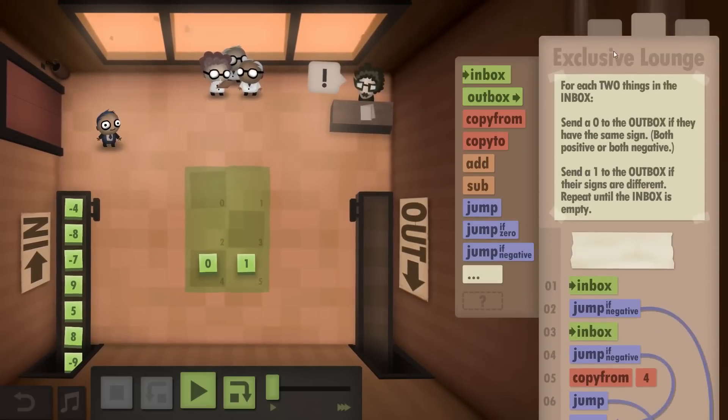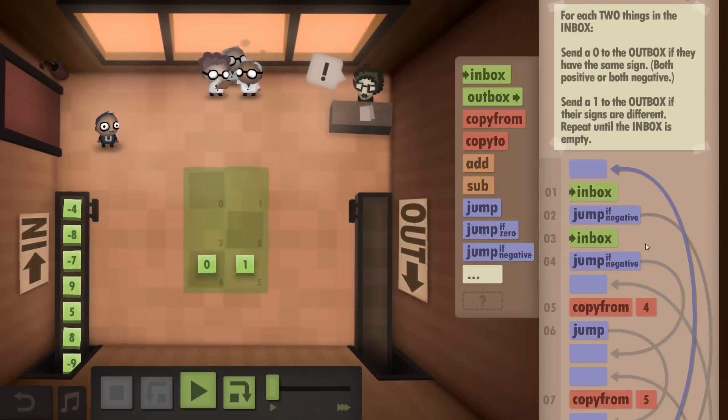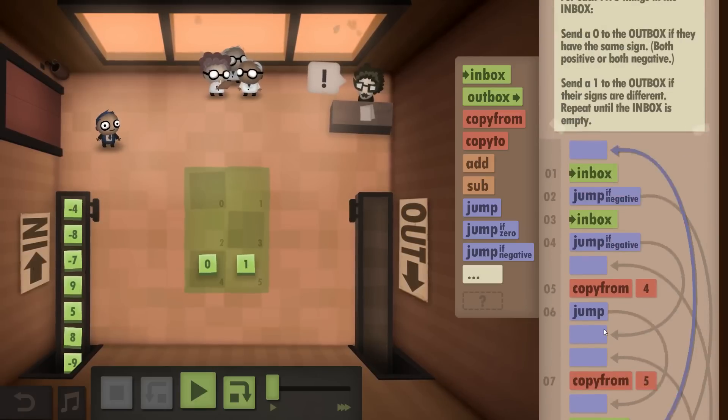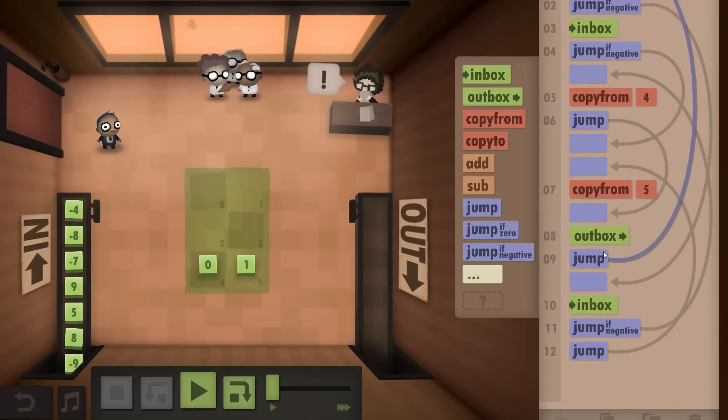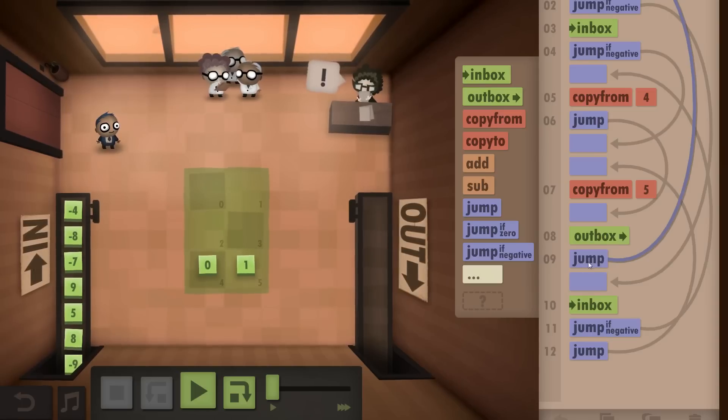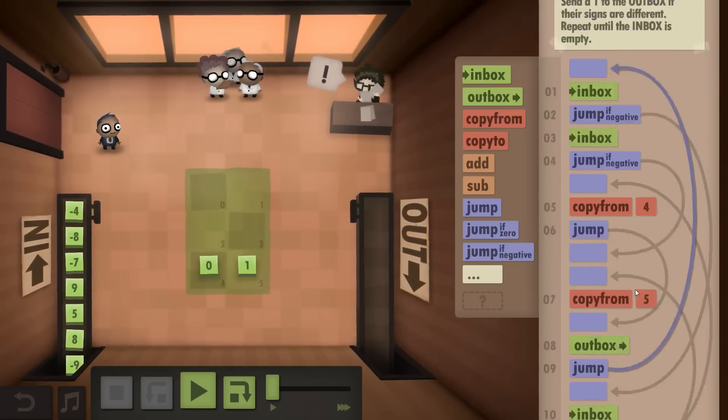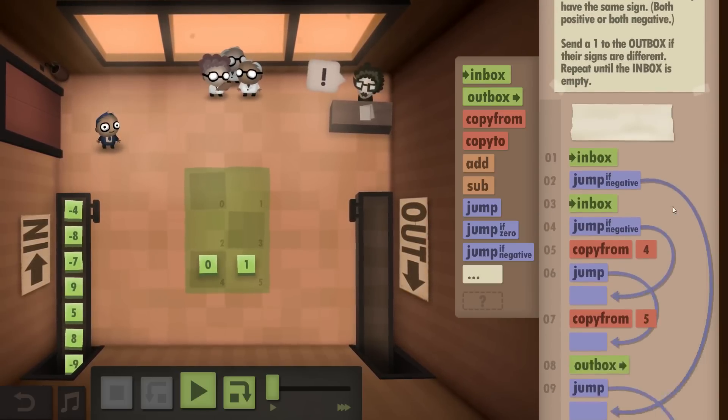This one is really complicated. I mean, again, it's the same thing. Just saving one jump command, which is the one after the Outbox. Because that is what creates the loop. And I end up with this.